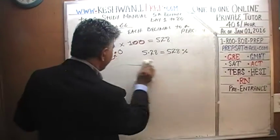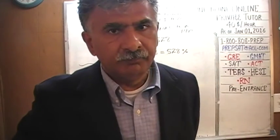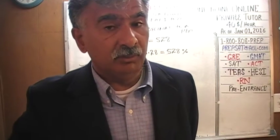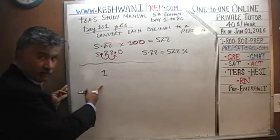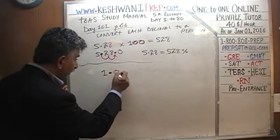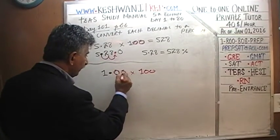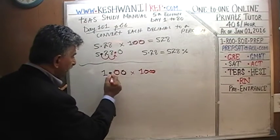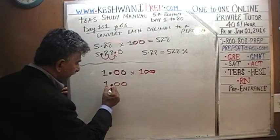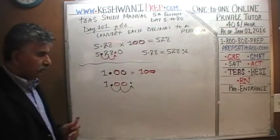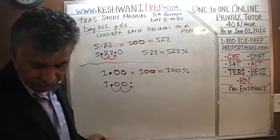This makes perfect sense. If I have one whole pizza, what percentage do I have? 100 percent. If I write 1 as 1.00 and multiply by 100 — since 100 has two zeros, I move the decimal two places to the right — I get 100. One whole of something is 100 percent, as everyone knows.